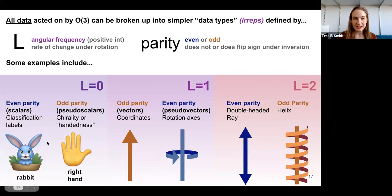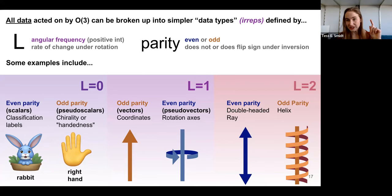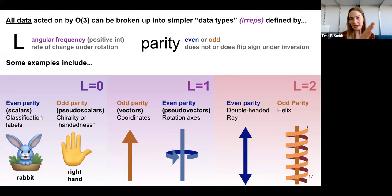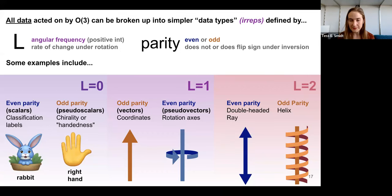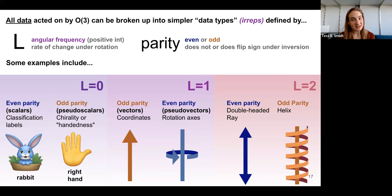An amazing result from group representation theory is that if you give me any type of data that changes predictably under rotation and inversion, I can provably break it up into simpler data types known as irreducible representations. No matter how complex a function you learn, I can always break it down into these bite-sized pieces. These IRREPs are defined by two numbers: their angular frequency — how quickly this group of numbers changes when you rotate your coordinate system — and parity — whether the quantity flips sign when you invert your coordinate system.